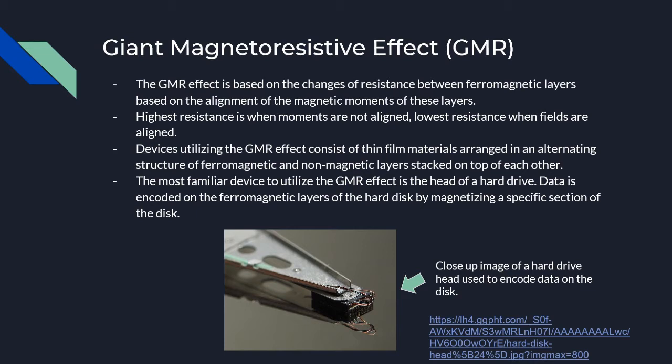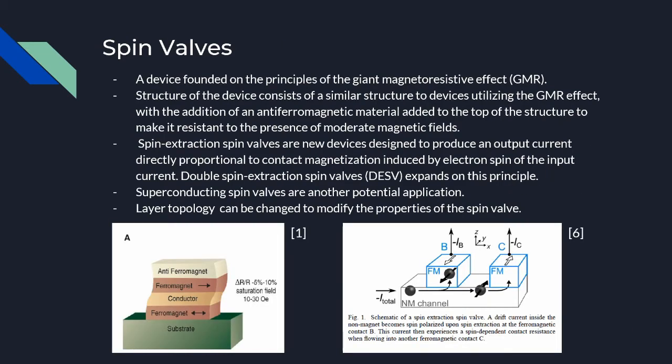Reading is the inverse of the write process. Spin valves are GMR devices that consist of two ferromagnetic layers with a thin non-metallic element, such as copper, between the two layers. One layer has a fixed magnetization, also referred to as the pin layer, while the other layer has varying magnetization, often referred to as the free layer. Changing the magnetization of the free layer from its minimum to its maximum value varies the resistance in the spin valve from 5 to 10%. Often, an anti-ferromagnetic material is placed near the pin layer to make it resistant to moderate changes in magnetic field from an outside source.